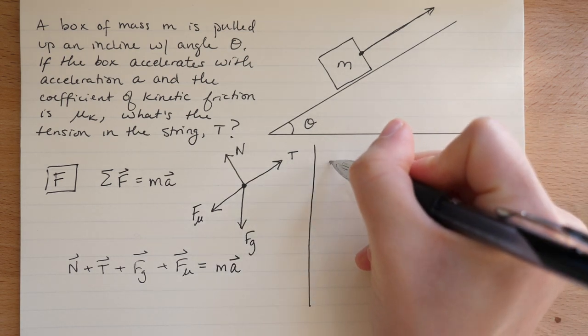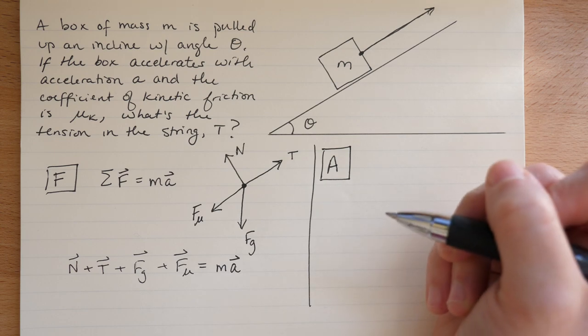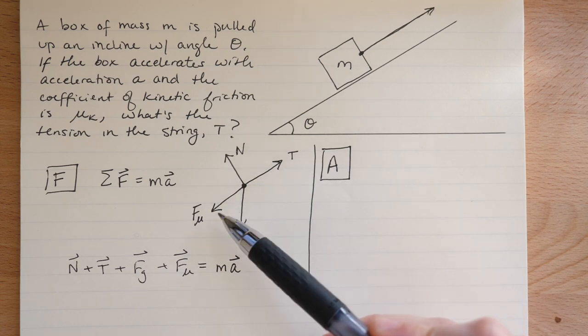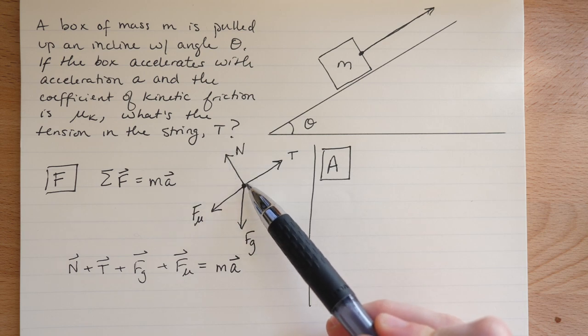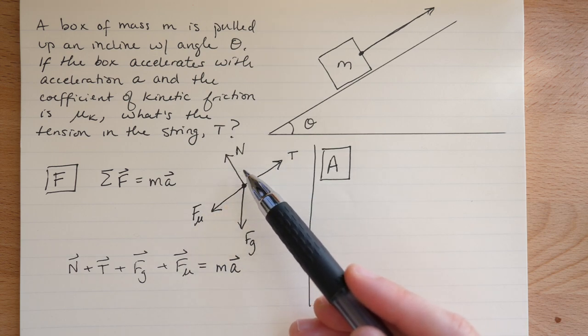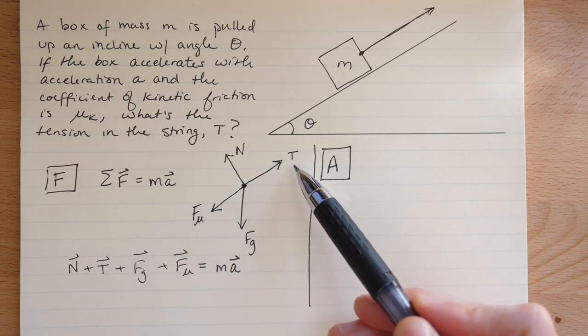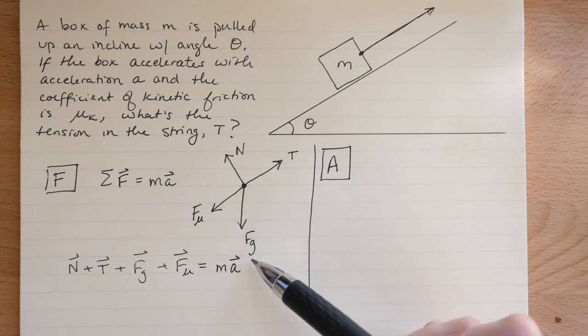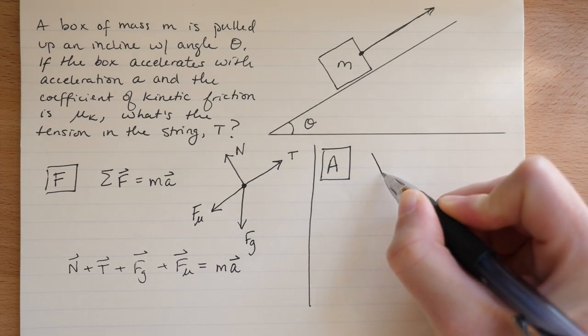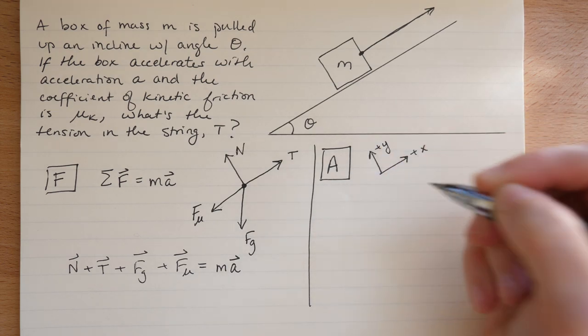Now we're ready to move on to A. A stands for axes, and we have a choice with axes. These axes are not set by nature. When I look at this picture, Fμ, T, and N are perpendicular to each other. So I'm going to orient my axes along the ramp, because if I do that, then these three forces are only acting in one direction instead of two directions. So it's less work. I'll only need to take components of the gravitational force. So I want my axes to go this way. Let's say plus X is up the incline and plus Y is perpendicular to the incline.